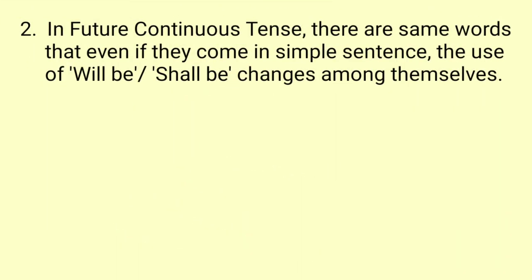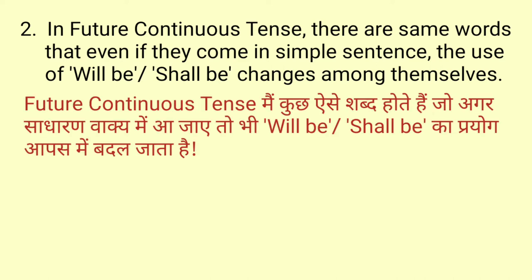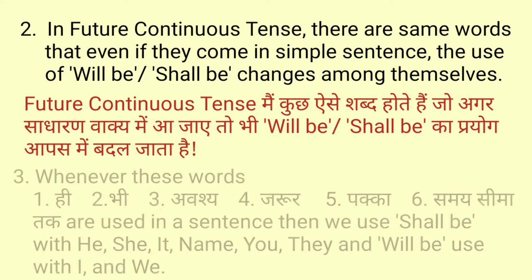In future continuous tense there are certain words that, even if they come in a simple sentence, cause the use of 'will be' and 'shall be' to be swapped between themselves. Future continuous tense mein kuch aise shabd hote hain jo agar sadharan vaakya mein aa jaayein to bhi 'will be' aur 'shall be' ka prayog aapas mein badal jaata hai.